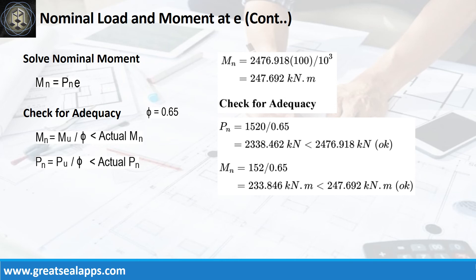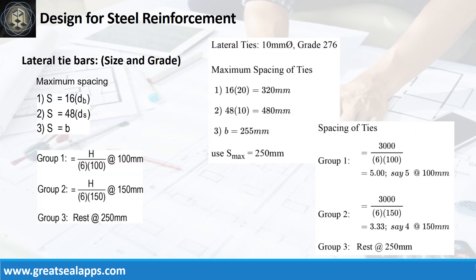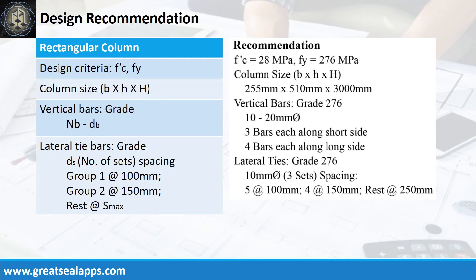Check for adequacy. Follow the given computations for lateral ties. Design recommendation as follows: fc' equals 28 MPa, fy equals 276 MPa. Column size is 255 mm by 510 mm by 3000 mm. Vertical bars of grade 276: 10 pieces, 20 mm bar. Lateral ties of grade 276: 10 mm bar, 3 sets spacing — 5 at 100 mm, 4 at 150 mm, rest at 250 mm.